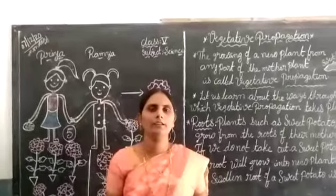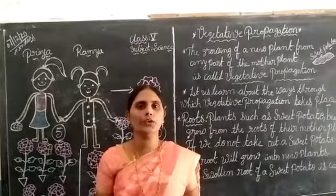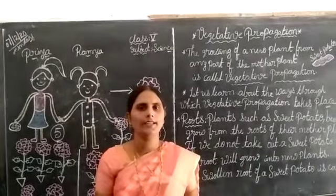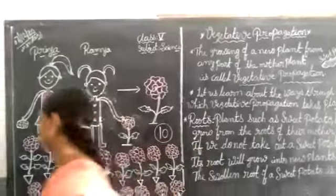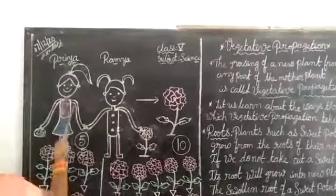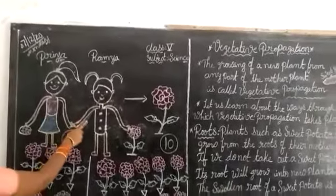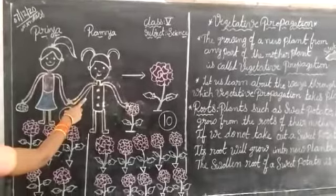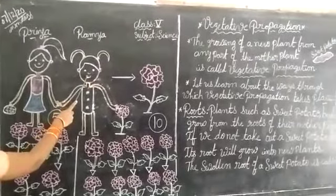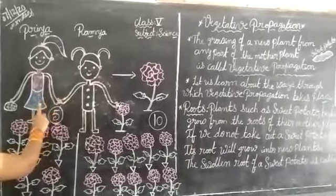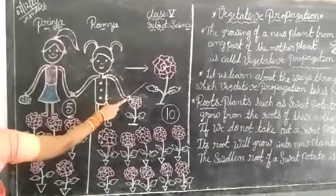Hi children, I am going to tell you a story of two friends. Listen carefully. Priya and Ramya are best friends. It was winter season and they both decided to grow some rose plants.